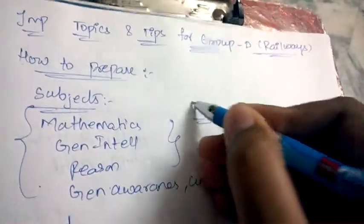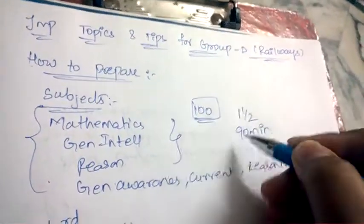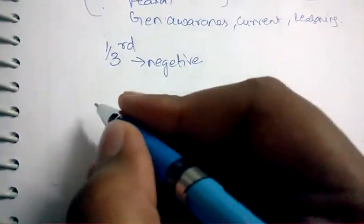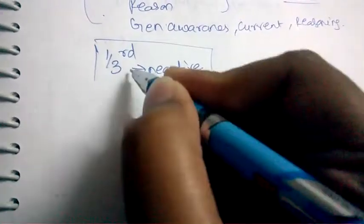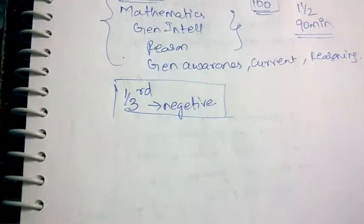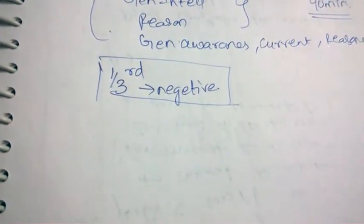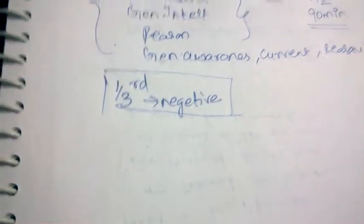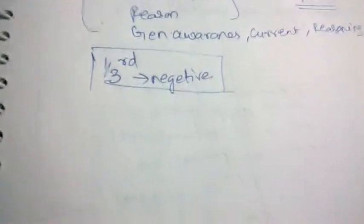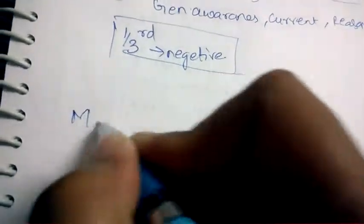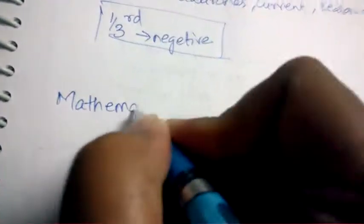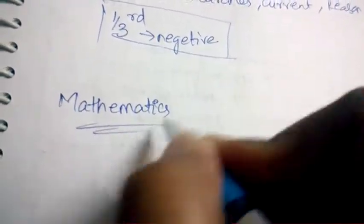There will be 100 questions and the time will be 90 minutes. Coming to negative marking — if we don't know the correct answer, it is better to leave it because there will be negative marking in Group D examination. One third of the mark will be cut if you give the wrong answer, so it's better to leave the answer.